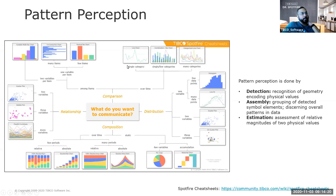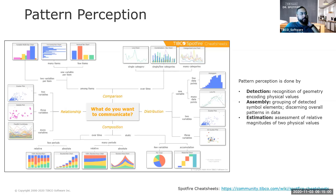Pie charts are not my favorite — I think they're very difficult to read. But if you're really just trying to show the composition of one element compared to others — for example, if you have one measurement that's really dominant over all others — then a pie chart can be useful for showing that composition of the total. I generally go to bar charts instead. Humans have a hard time recognizing angles. Even looking at this example of a pie chart, the green and yellow look very close in size — it's hard to see which one is really bigger.